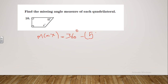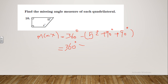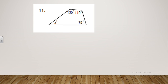That will be 360 degrees minus (52 degrees + 90 degrees + 90 degrees). First, 90 + 90 + 52 = 232. So we have 360 minus 232, and that gives us 128 degrees. So the measure of angle x is 128 degrees.